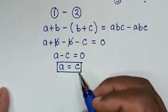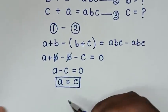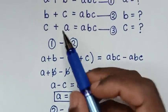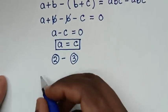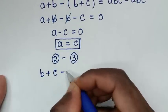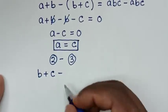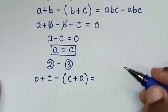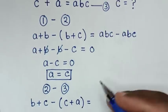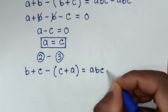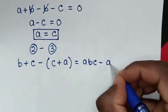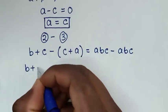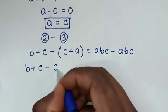Next, we take equation 2 minus equation 3. Equation 2 left side is B plus C, minus equation 3 left side which is (C plus A), equal to ABC minus ABC from the right sides.